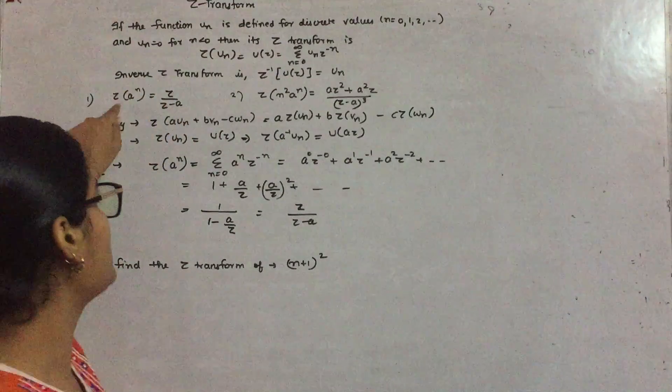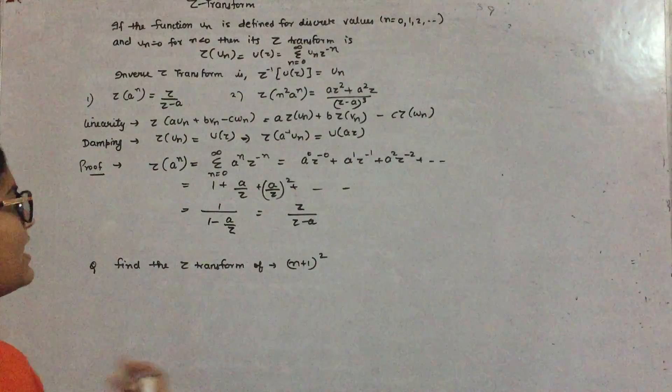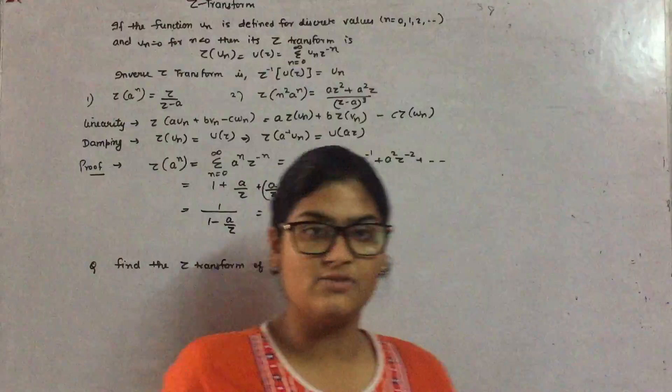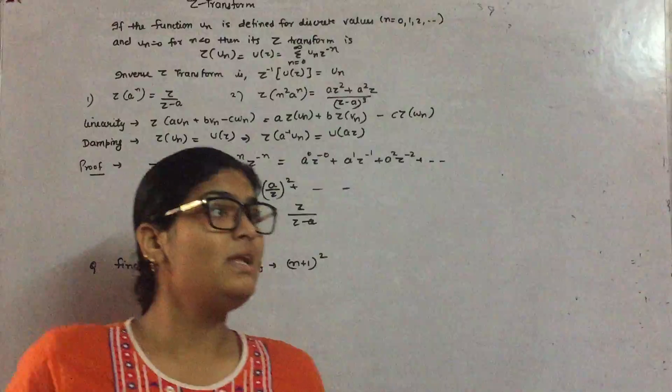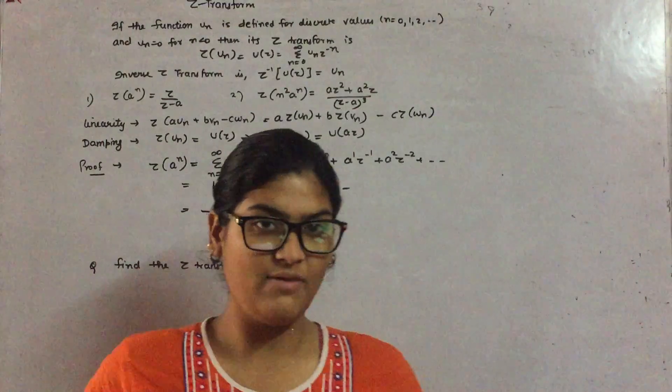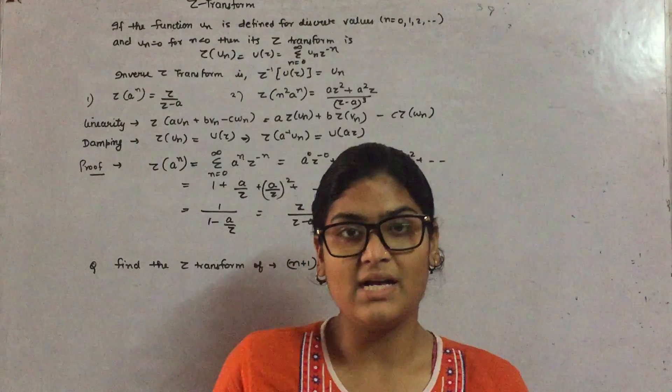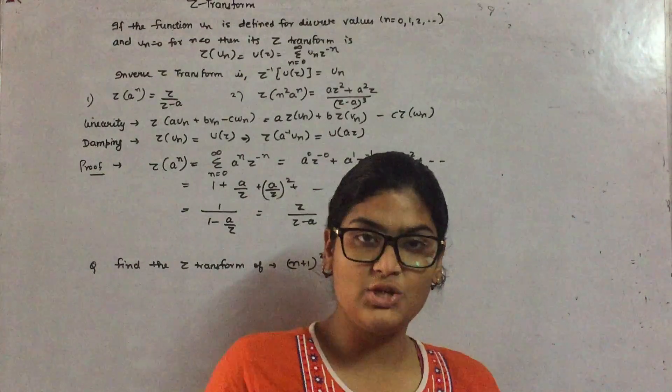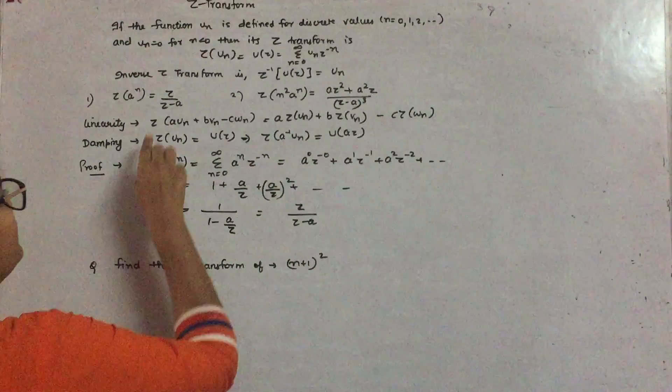Now there are so many properties of Z transform like linearity and damping. Let us discuss them. Linearity is the property in which you have to distribute the Z transform into the addition operation or subtraction operation.